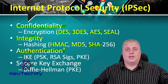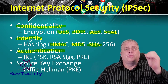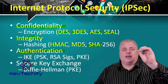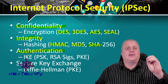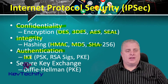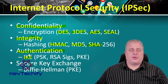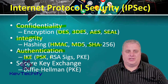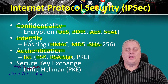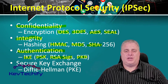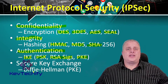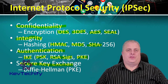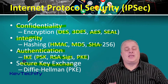Authentication ensures that information is sent from a trusted third party. In IPsec, authentication is handled by either Internet Key Exchange, known as IKE. In IKE, we can either use pre-shared keys, PSKs, we can use the Rivest-Shamir-Adleman signatures, or RSA signatures, or we can use public key encryption, PKE. IPsec also provides secure key exchange through the Diffie-Hellman algorithms, which allow the public exchange of keys securely.